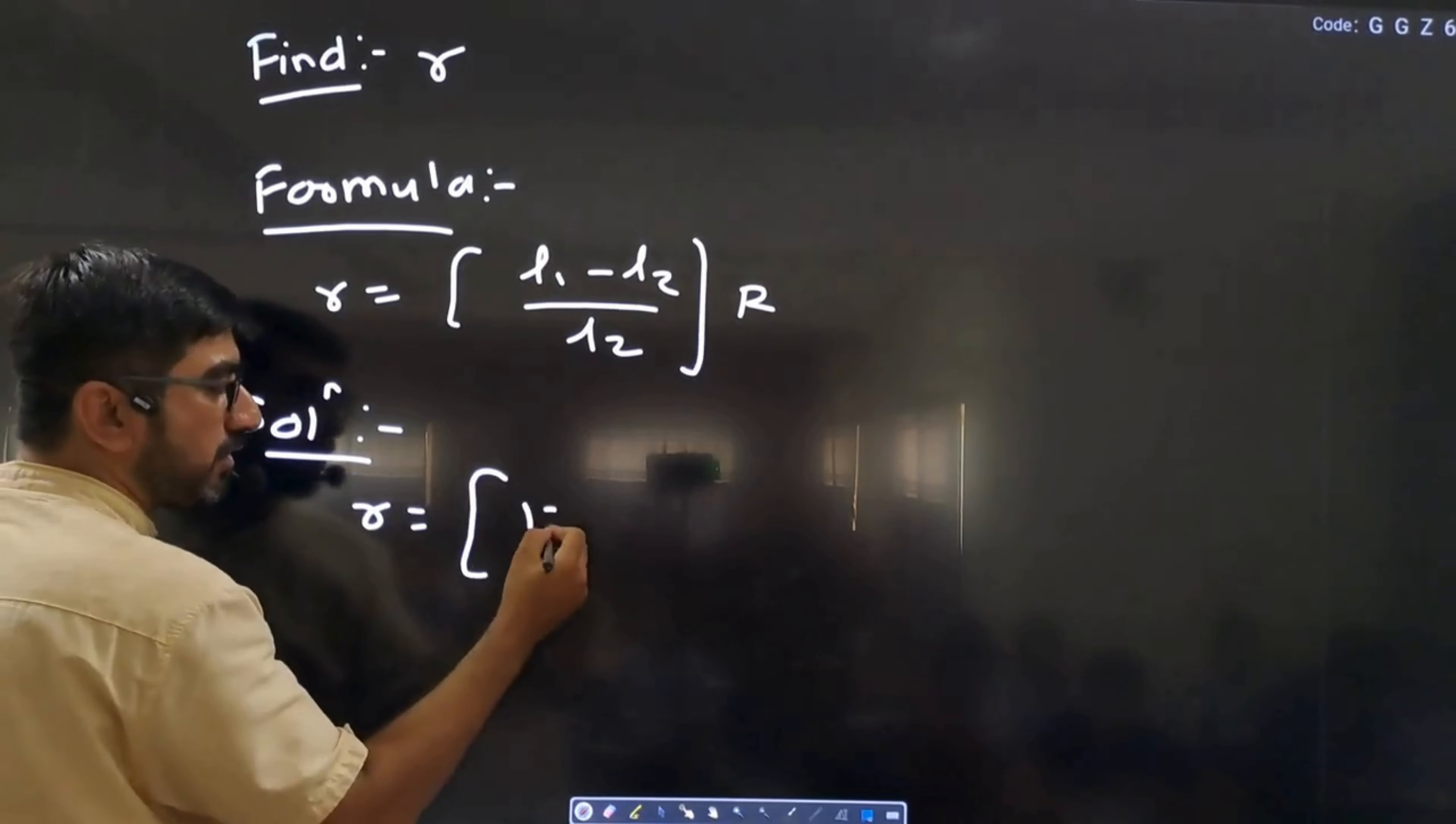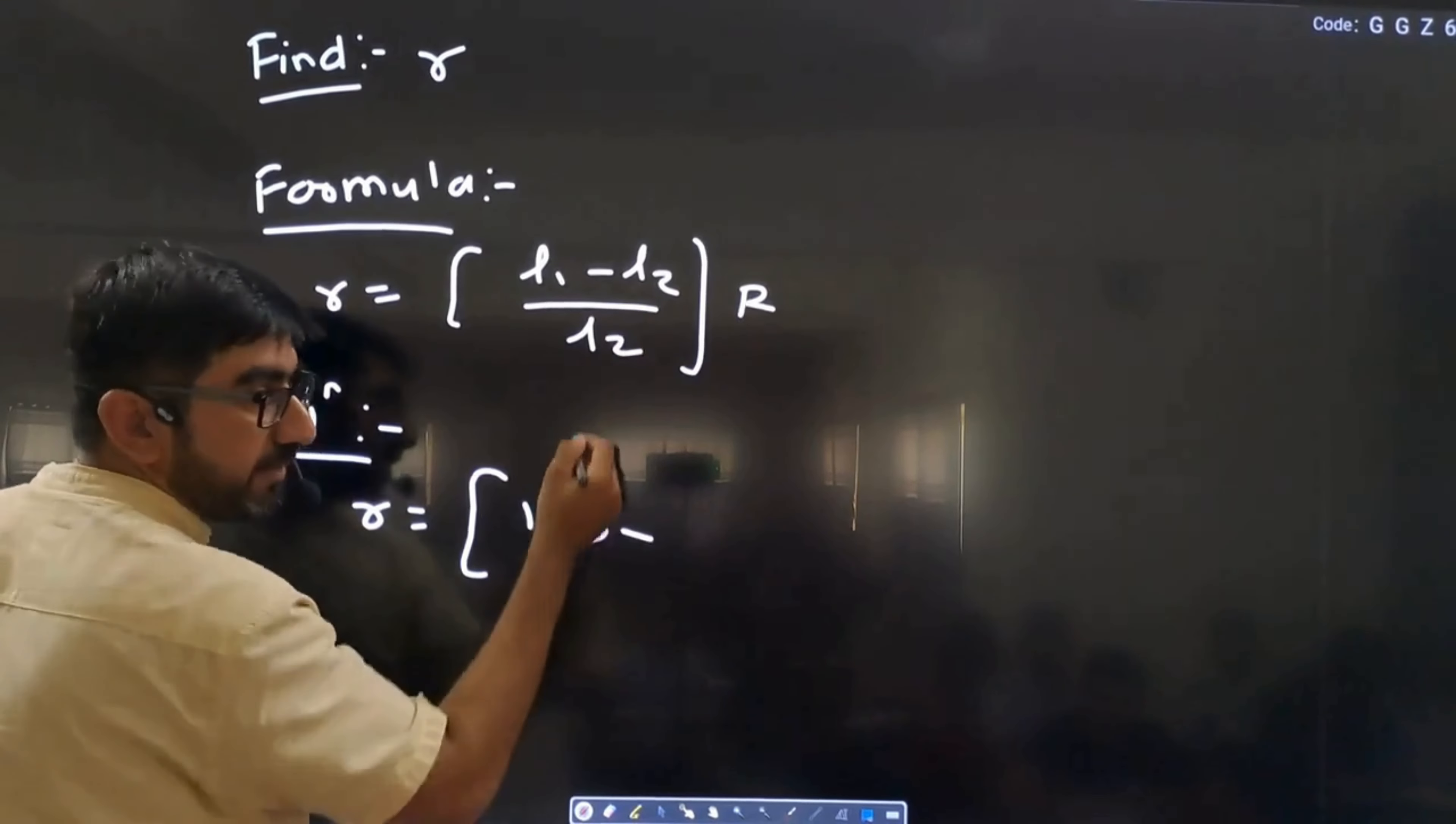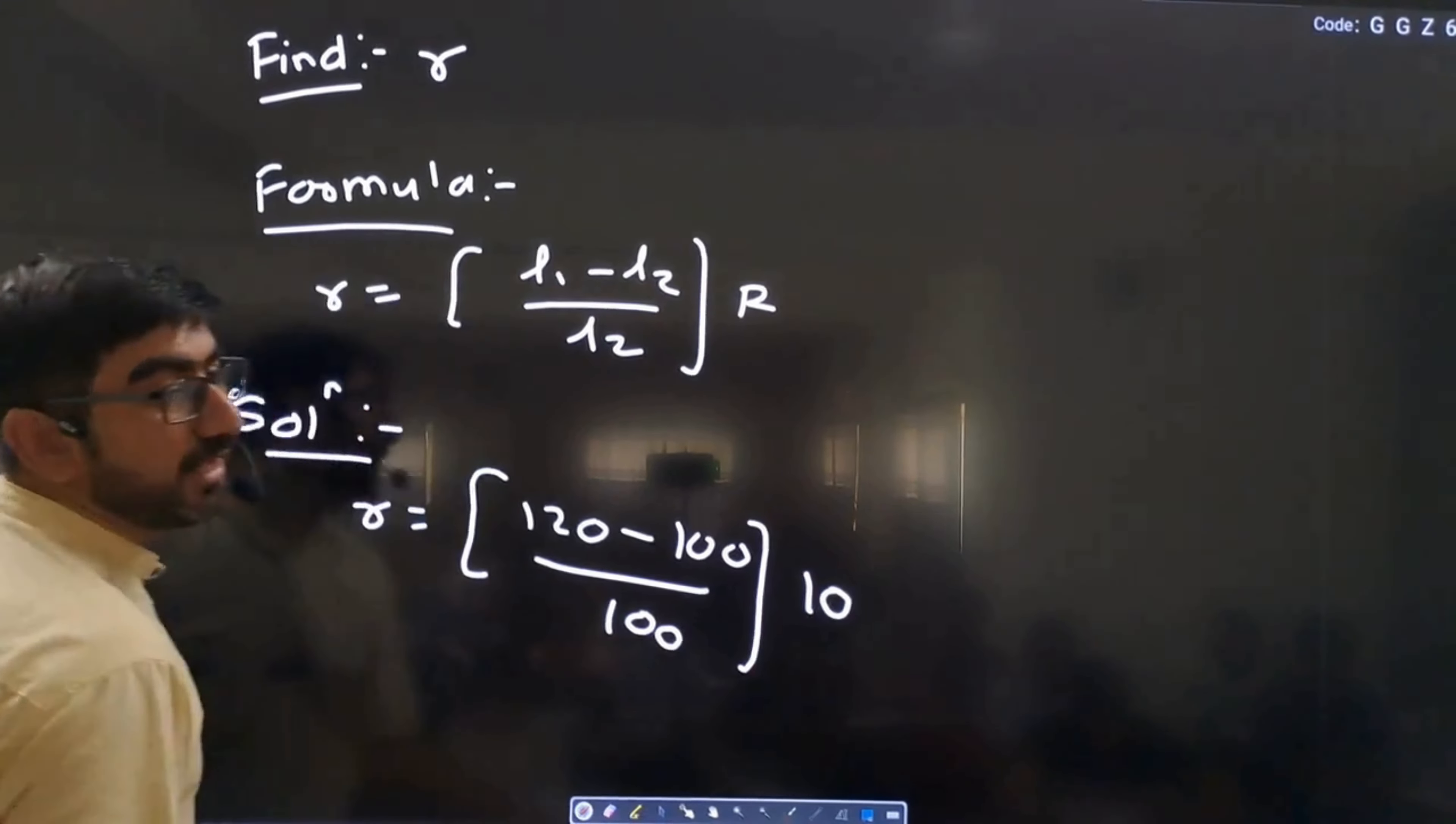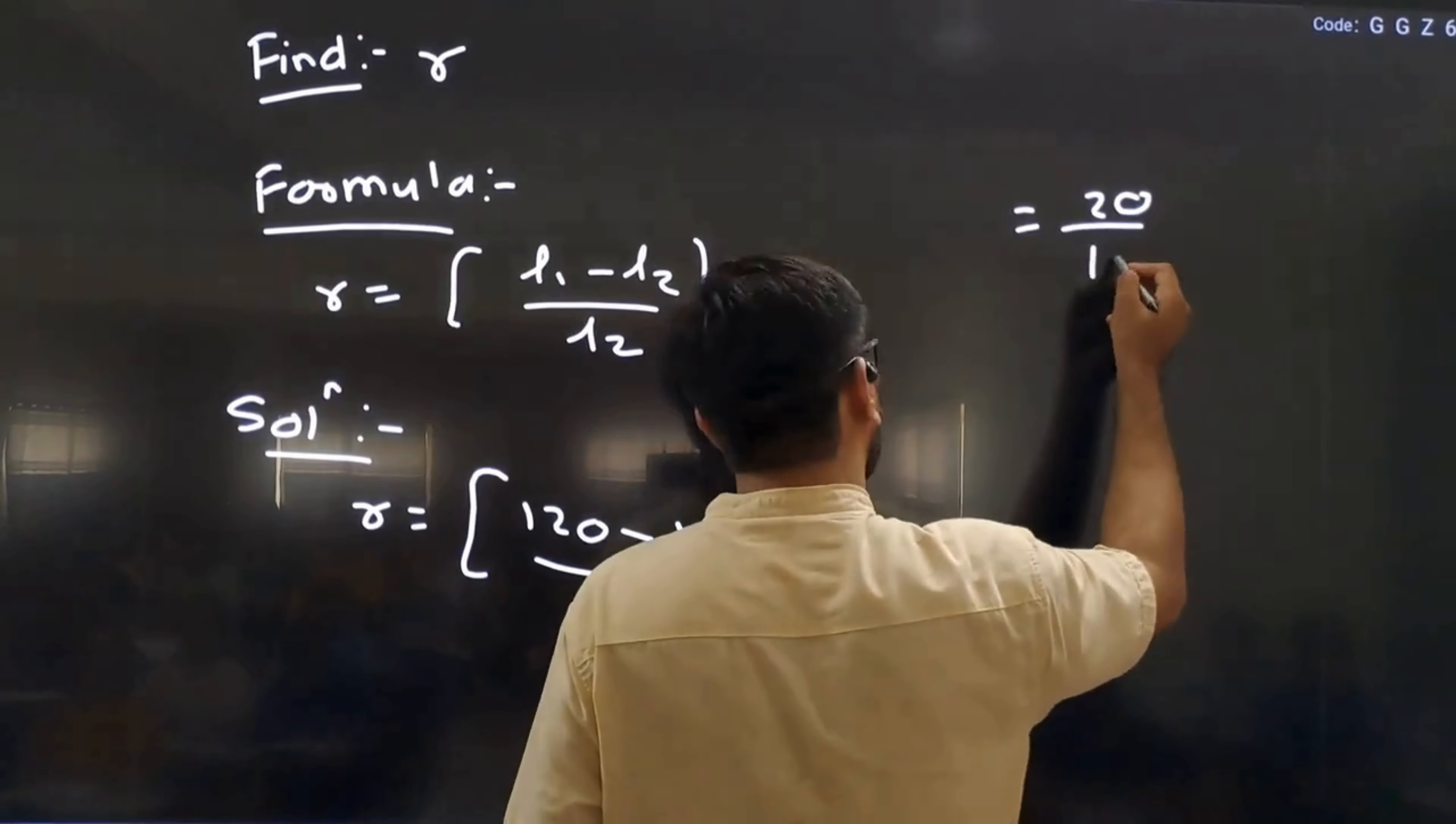So the question is solved. Small r equals to L1, which is 120, minus L2, which is 100, upon L2, which is 100, into S, which is 10. So 20 by 100 into 10.